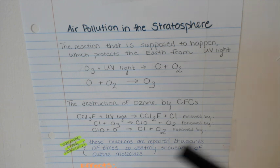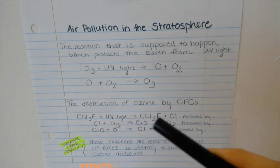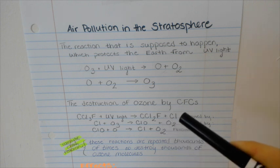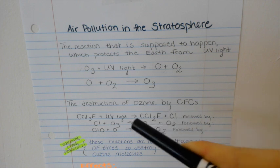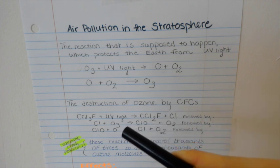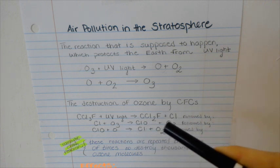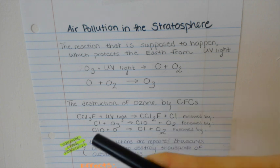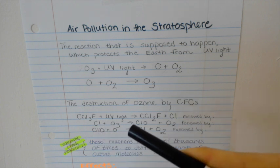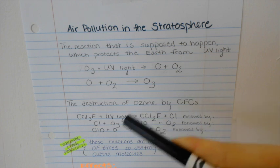In the stratosphere, along with ultraviolet light, they react and you get a chlorine atom. That chlorine atom is destructive because it reacts with ozone and forms chlorine monoxide and O2. The chlorine monoxide reacts with an oxygen atom, and you get the chlorine atom again.